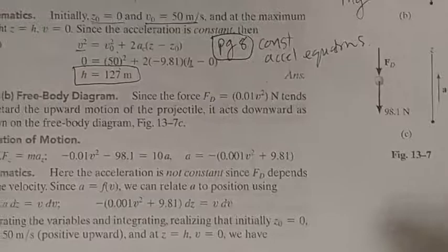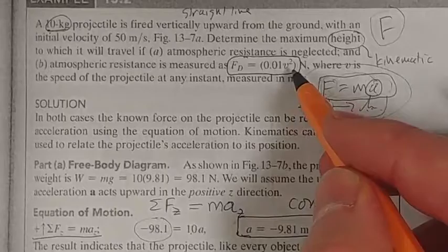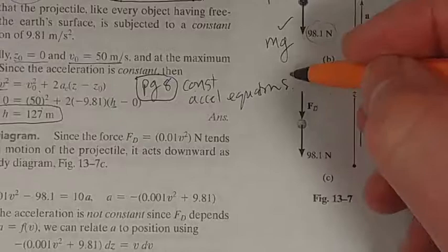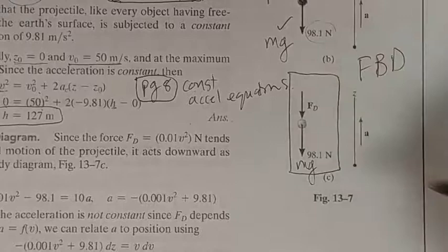part B says we, now we have this force as well. This is our drag force. FD is 0.01 V squared. That's another force that's acting on the particle. So first step, go to your free body diagram. Free body diagram. We've got this MG here and we've got FD. And they're both acting down.